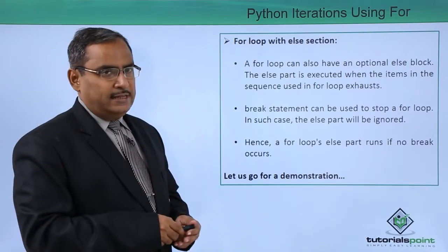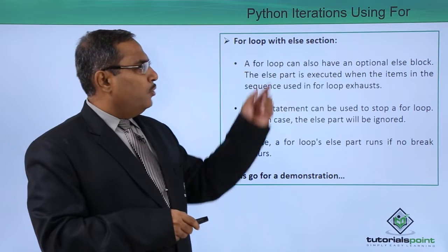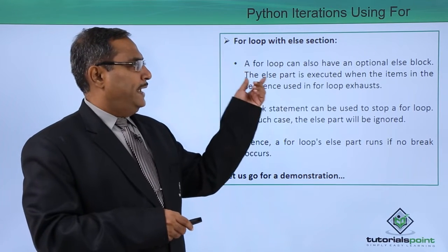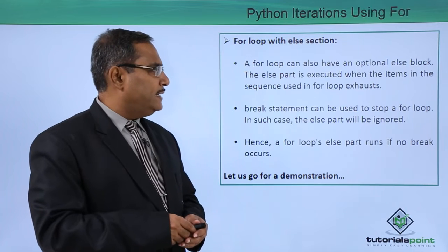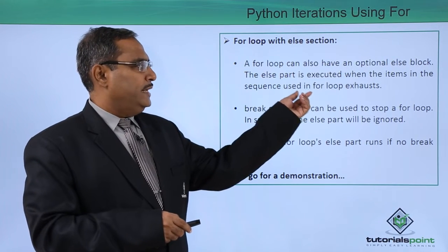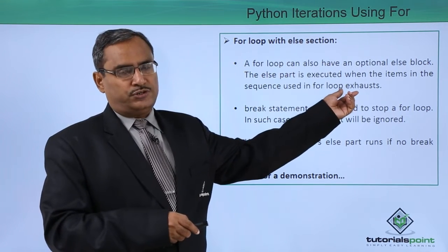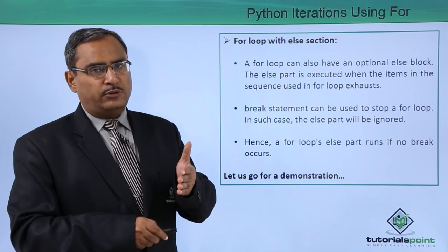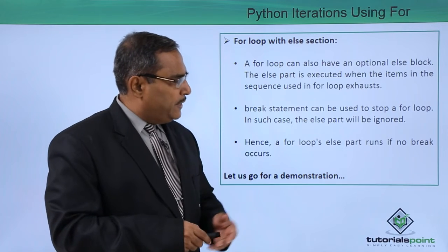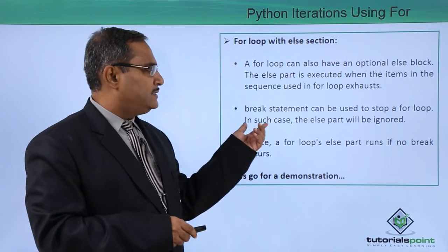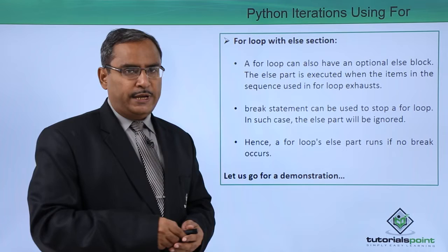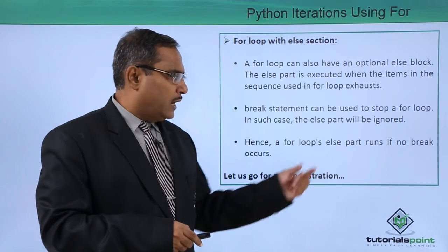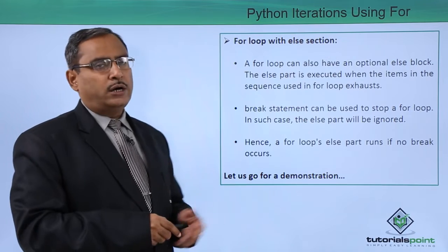For loop with the else section. For loop can also have an optional else block. The else part is executed when the items in the sequence used in for loop exhausts. When the sequence will get exhausted then the else part will get over the control. Break statement can be used to stop a for loop - in such case the else part will be ignored on the other hand. Hence a for loop's else part runs if no break occurs.